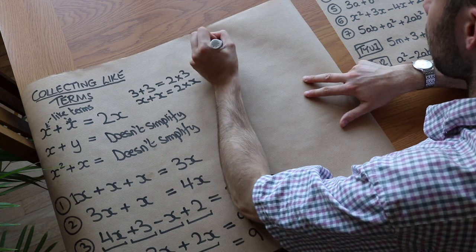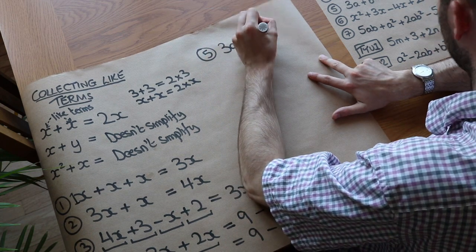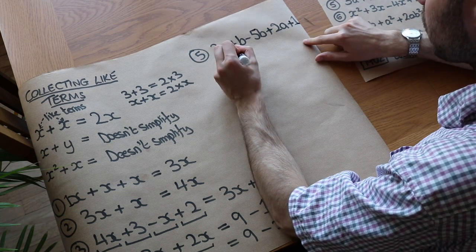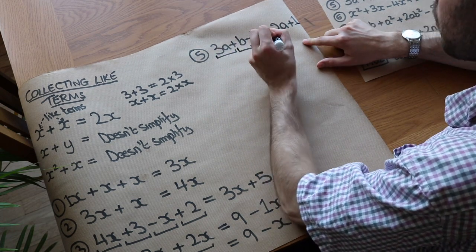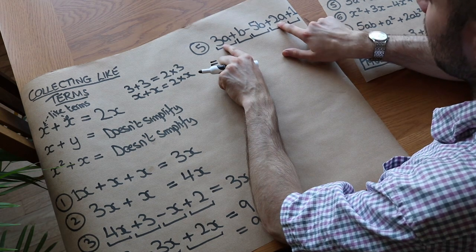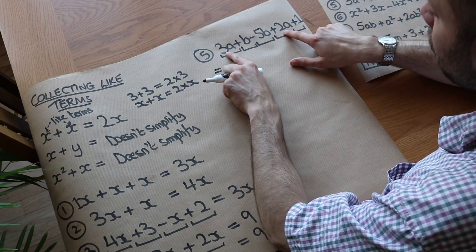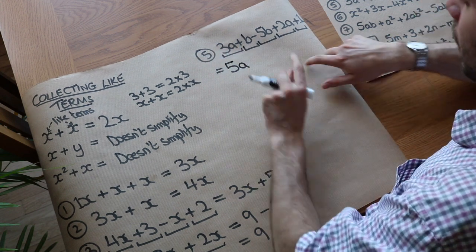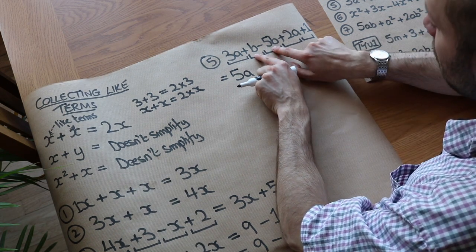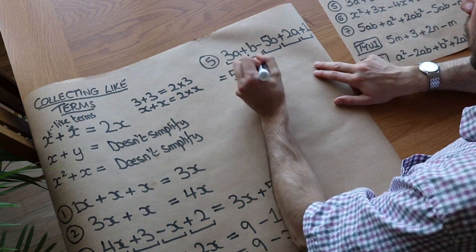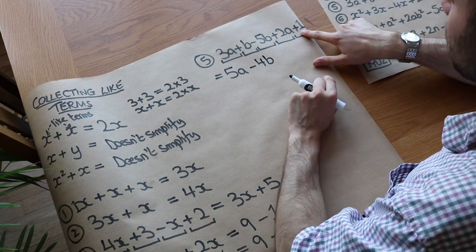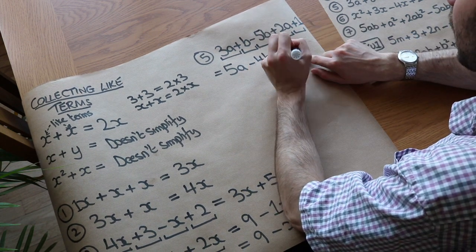We've got 3a plus b minus 5b plus 2a plus 1. We have three different types of terms. Underlining: 3a, plus b, minus 5b, plus 2a, and plus 1. The a terms: 3a plus 2a — 3 plus 2 is 5 — giving 5a. The b terms: 1 lot of b minus 5 lots of b — 1 minus 5 is minus 4 — giving minus 4b. Then the constant term plus 1, which has no variables. We call it a constant term, and there's nothing else for it to collect with, so it stays as plus 1.